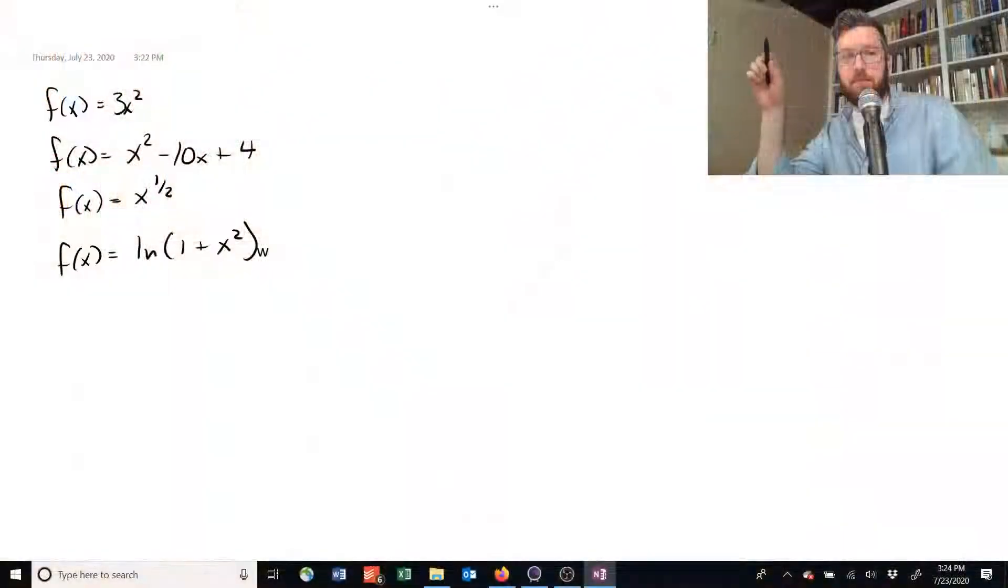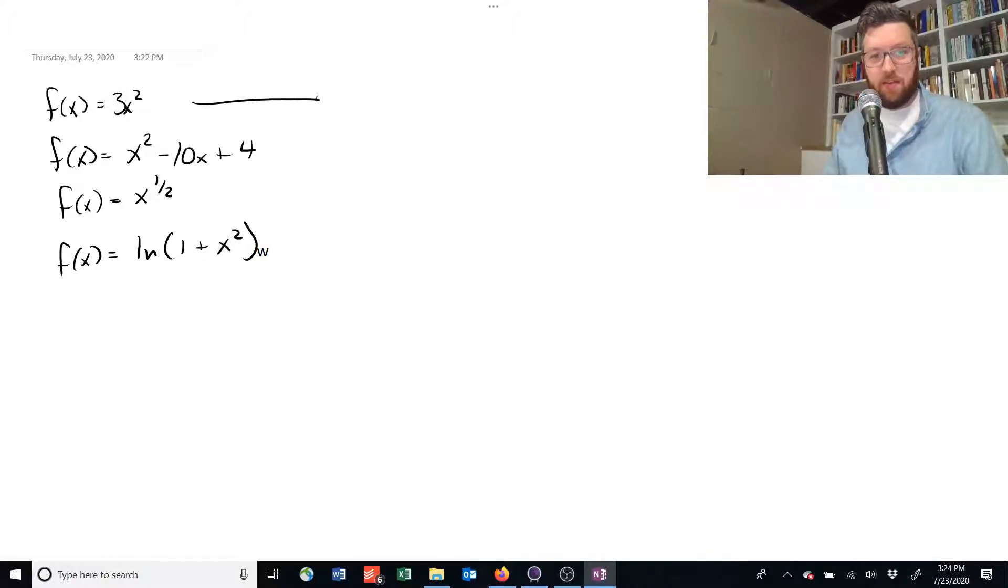Okay, so let's take a look at these four examples. First derivative: if we've got 3x squared and we want to know the derivative of that, we're going to use the exponent rule. 3 times 2 times x to the 2 minus 1 simplifies to 6x.